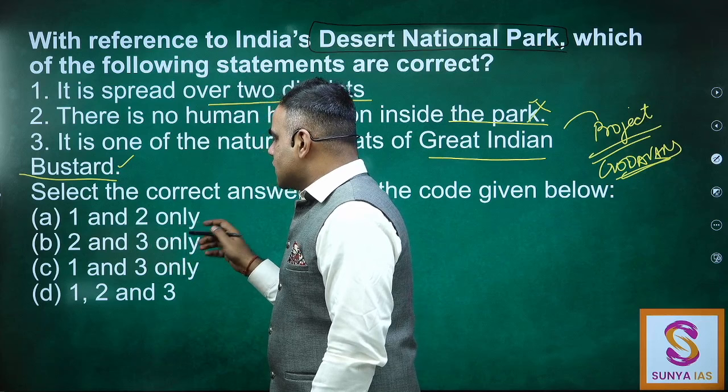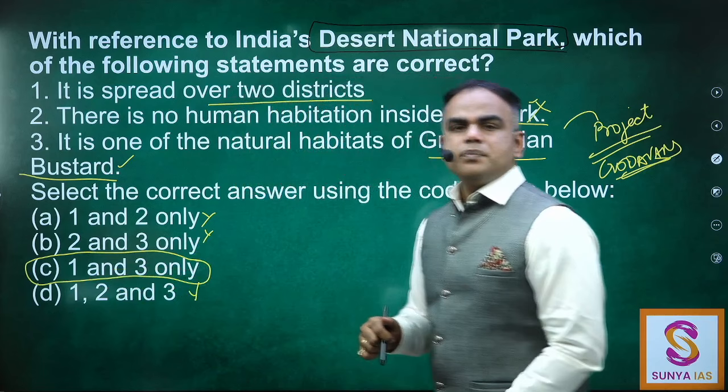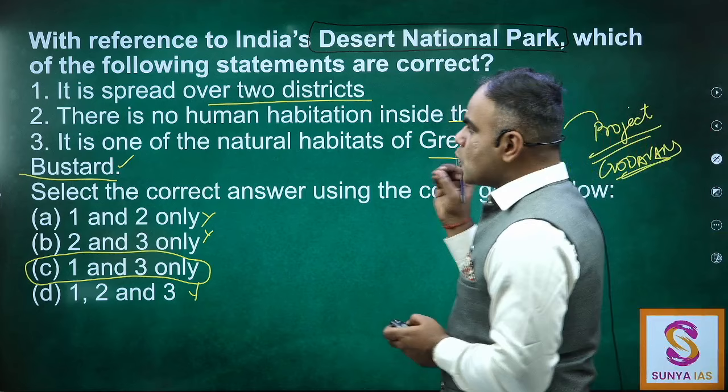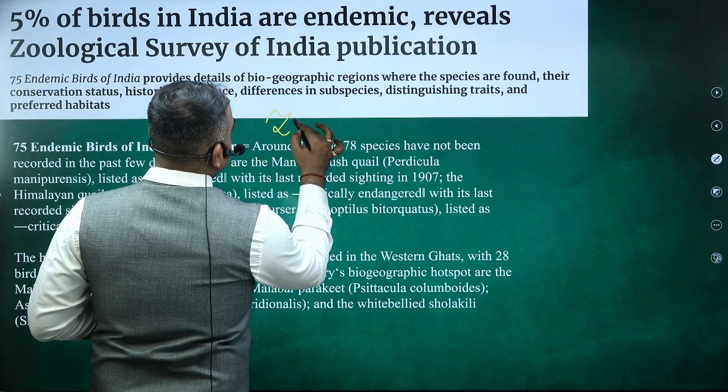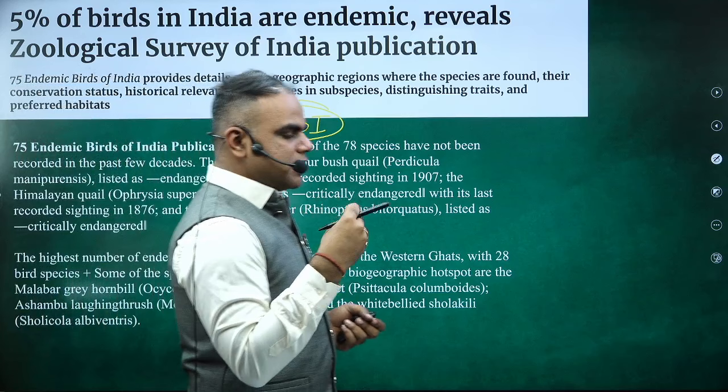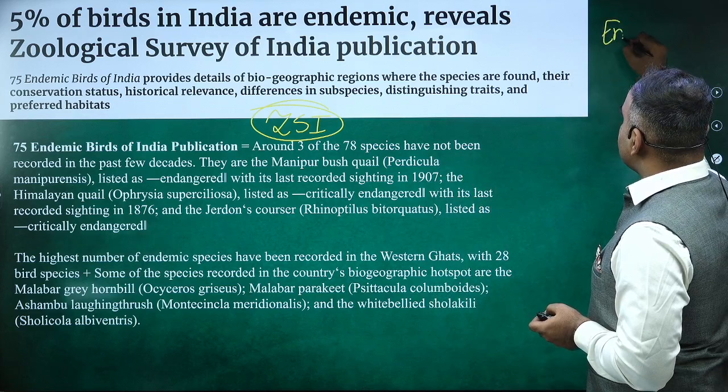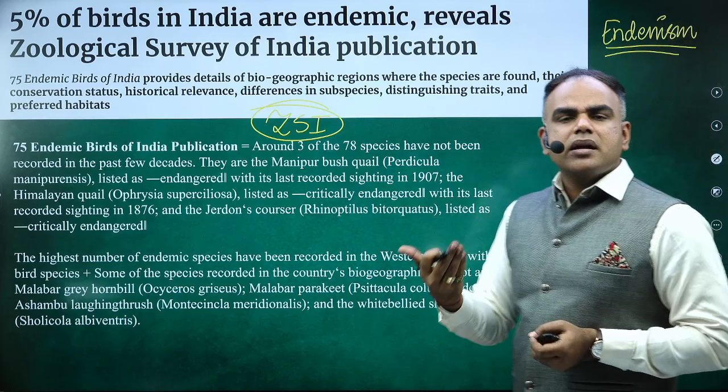Don't confuse the distribution: the ZSI report says most endemic birds are from Western Ghats, but Jordan's Cursor is in Eastern Ghats, not Western Ghats. To summarize Jordan's Cursor: critically endangered, nocturnal, endemic to Andhra Pradesh and Telangana — Eastern Ghats — specifically Srilankamaleshwar Wildlife Sanctuary. At the end of the birds section, I will give you a comprehensive list of all critically endangered birds, as well as a small list of diurnal and nocturnal birds for reference.